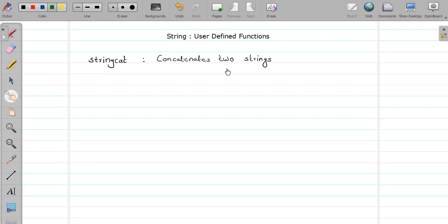Hello friends, welcome to the video tutorial of C programming. We are studying user-defined functions for strings. In this video, I'm going to cover the string cat function which will concatenate two strings. We already studied the library function for the same.